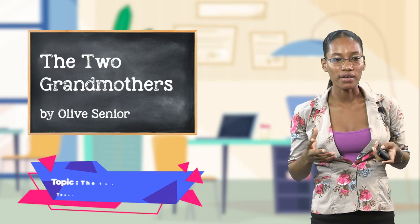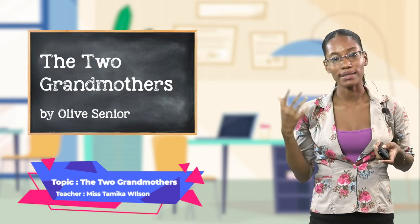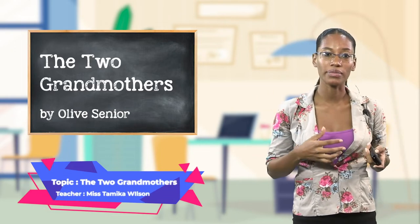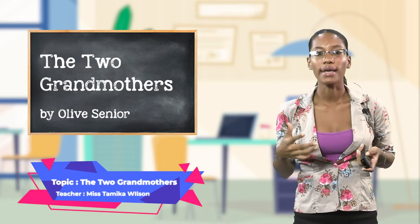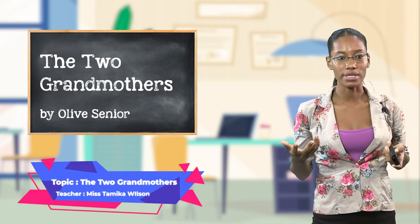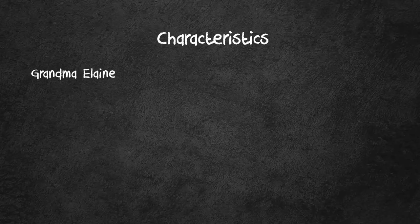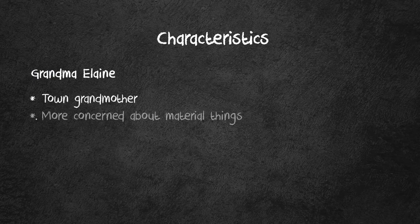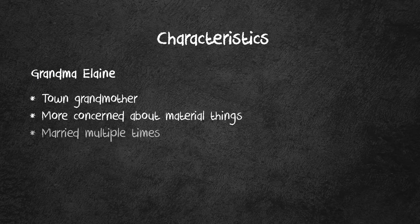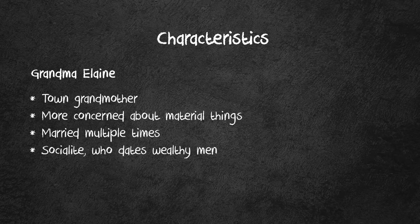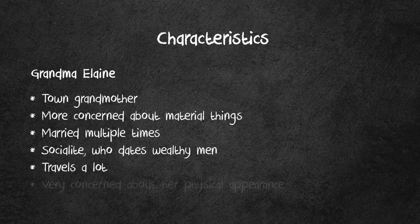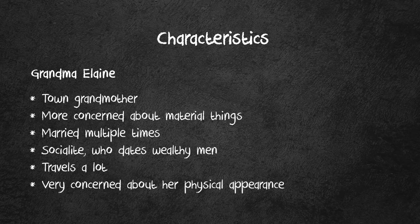For the purpose of our summary, we're going to look at some characteristics of both Grandma Del, Grandma Elaine, and our narrator. Grandma Elaine is a town grandmother. She's more concerned about material things. She has been married multiple times. She's a socialite who dates wealthy men. She also travels a lot, and she's very concerned about her physical appearance.